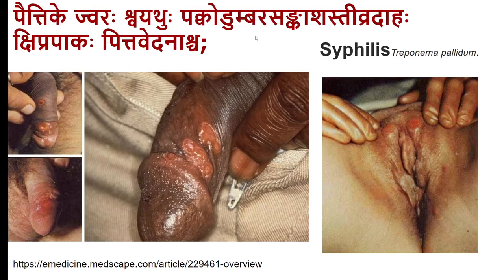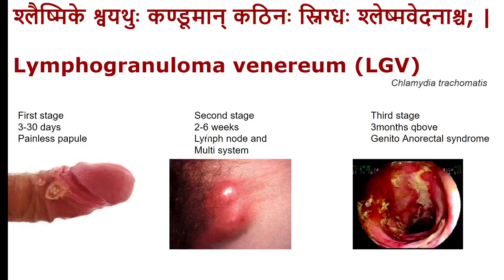Kaphaja Upadamsha: Svaishnike, swelling that is firm in nature, smooth in appearance, with Kanduman (itching), Katshina (firm), Nikdaha. This corresponds to lymphogranuloma venereum (LGV), produced by Chlamydia. LGV presents within three to thirty days of sexual contact as a painless papule.